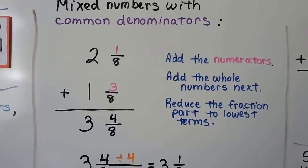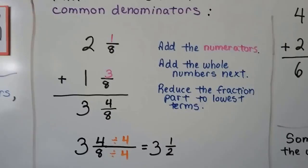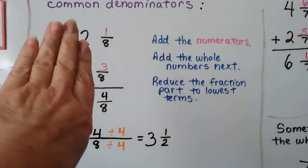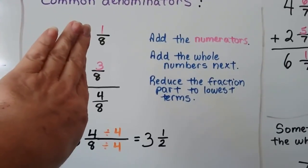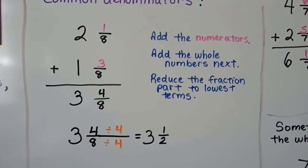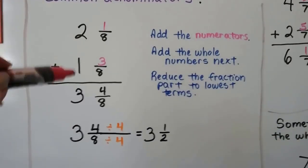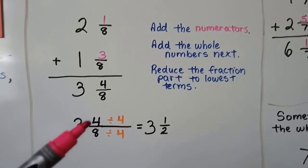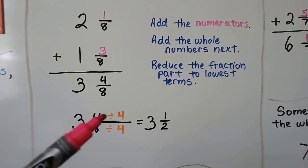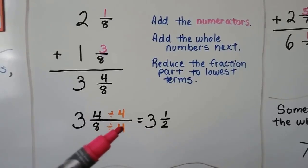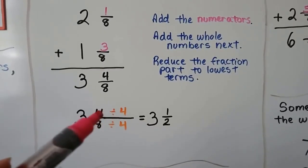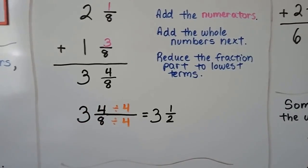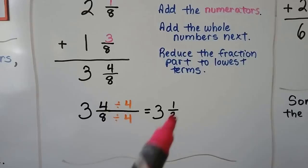So if we have mixed numbers with common denominators, that's going to be easy. All we have to do is add the numerators just like we did when we were just adding fractions. If we had 1 eighth and 3 eighths, it would make 4 eighths. Then we add the whole number and we have 3 and 4 eighths, but this needs to be reduced.